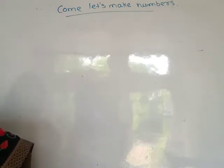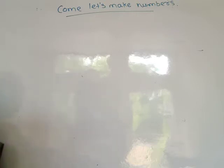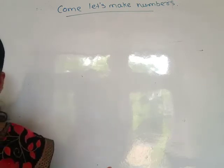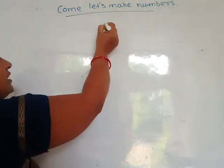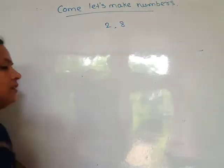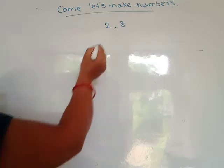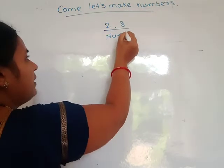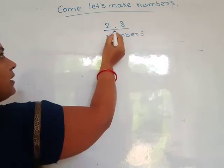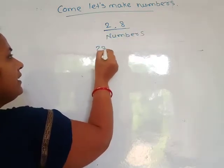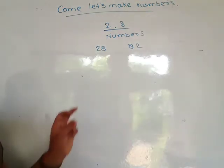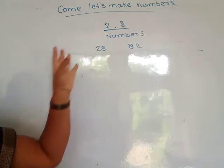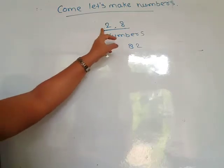We will form all possible two-digit numbers from the given digits. Here digits are given and you write the two-digit numbers. See here — the first example has digits 2 and 8. By using these two digits you write the numbers. Two numbers are formed: 28 and 82.